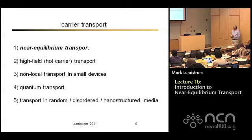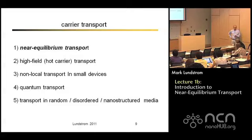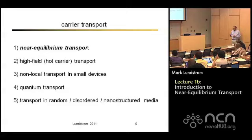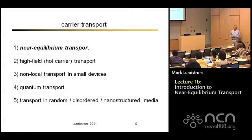There's another field discussed at the previous summer school about transport in random and disordered media — grain boundaries, polycrystalline or amorphous materials. This is a research topic where methods haven't fully been worked out. It's of more and more importance in electronic devices because of interest in artificially structuring materials at the nanoscale, where structures have a highly random nature and understanding transport in them is becoming increasingly important. We're going to focus on near equilibrium transport because it is really the starting point for all of these others.